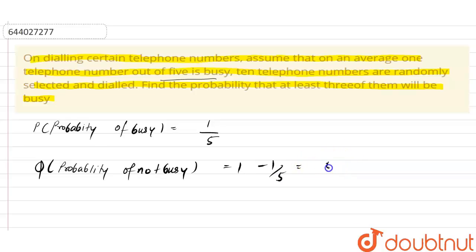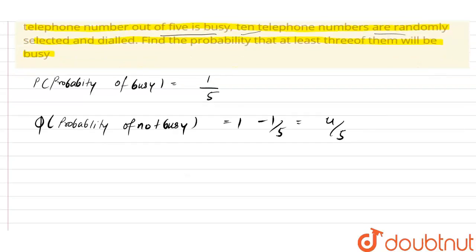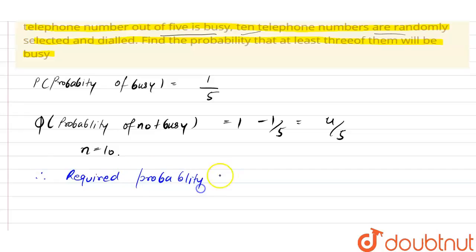We have 10 telephone numbers randomly selected, so n equals 10. Therefore, the required probability is the probability that at least 3 of them will be busy.